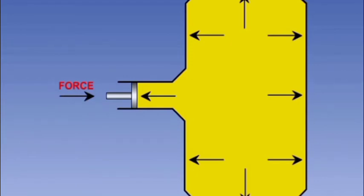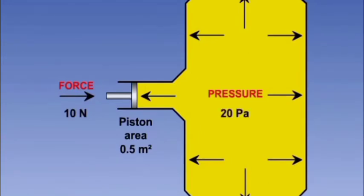As you can see in the diagram, if the force applied is 10 newtons and the area of the piston is 0.5 square meters, then the total pressure will be 10 divided by 0.5 which is 20 newtons per meter square or 20 Pascals.